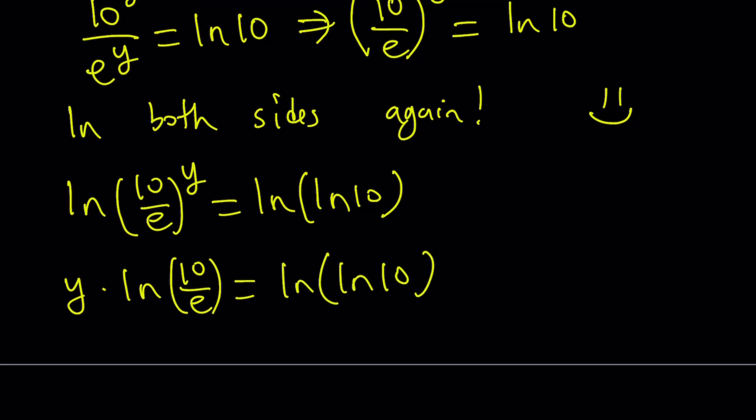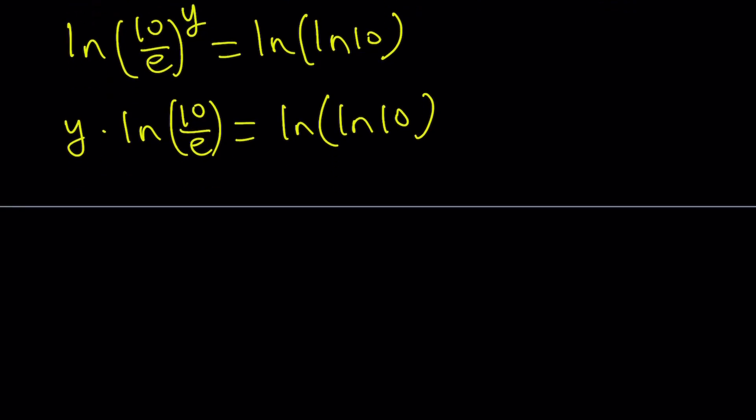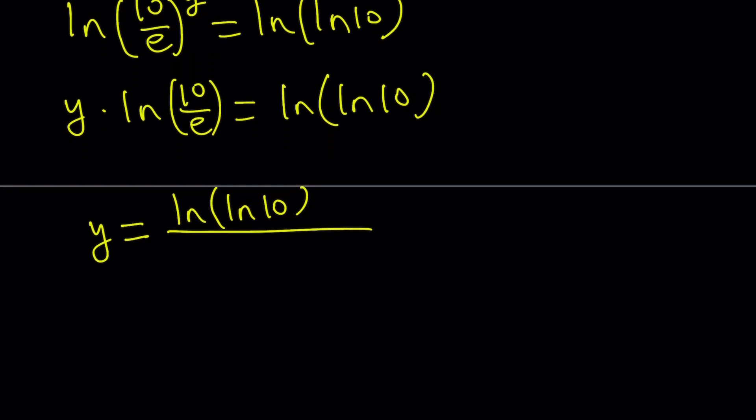Since we're trying to solve for y, it would only make sense if you divided both sides by ln 10 over e. And that gives us the following. y equals ln ln 10 divided by, notice that this is a quotient. And ln of a quotient basically can be written as a difference of two ln's. So we can write that as ln 10 minus ln e. But ln e is just equal to one. So we can write it like this. Pretty good, right? Well, this is the value for y.